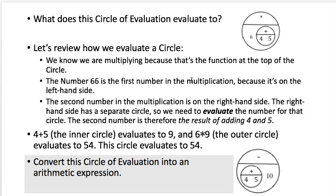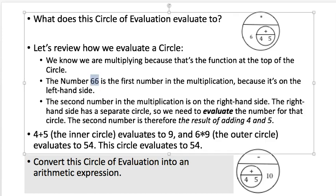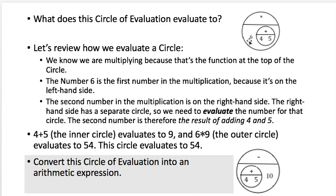Let's look at another example — what does this circle of evaluation evaluate to? We're multiplying because that's the function at the top. The number six is the first number on the left. To get the second number we evaluate the inner circle: it's an addition of four and five, which evaluates to nine. So the whole thing evaluates to six times nine, which is 54.